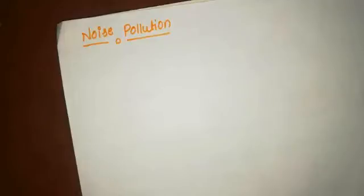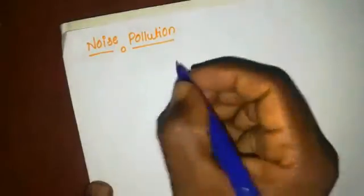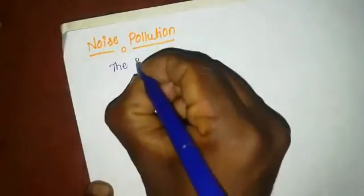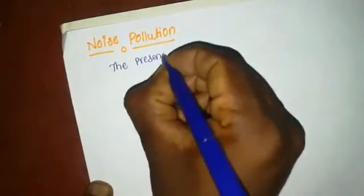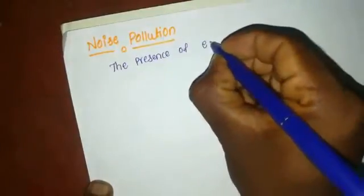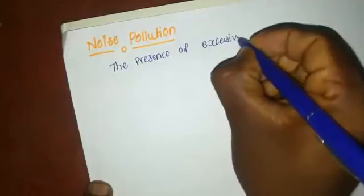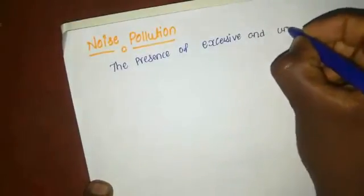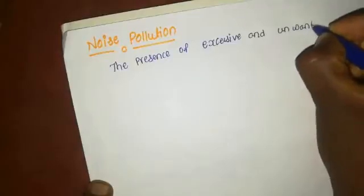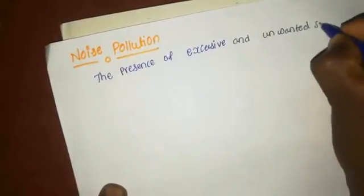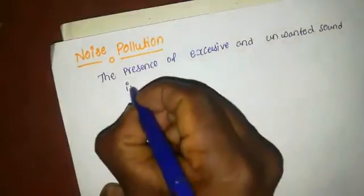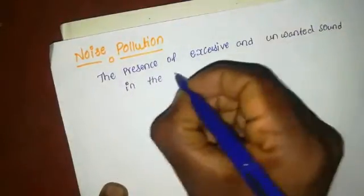Next we move on to noise pollution. What is the meaning of noise pollution? Noise pollution is the presence of excessive and unwanted sound in the environment. The presence of excessive and unwanted sound in the environment is called noise pollution.